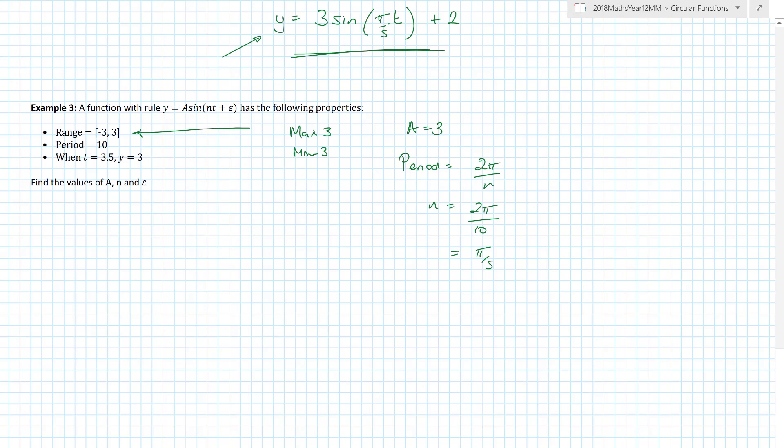So now what's all this t equals 3.5 plus epsilon, y equals 3? Well if we go back now to say, well we now got y is equal to a, we know is 3, times sine, we know n now is π on 5 times t, but we've got to find this epsilon business.